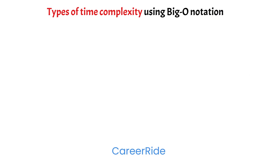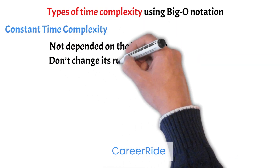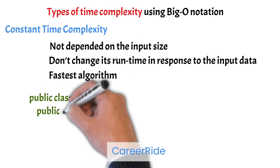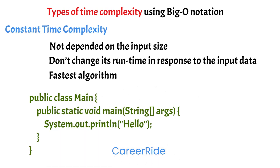Now let's understand the types of time complexity using Big O notation. Constant time complexity: when an algorithm is not dependent on the input size and does not change its runtime in response to the input data, it is said to have constant time complexity. An algorithm with constant time complexity is the fastest. This algorithm performs the print operation only once and takes constant time to execute, no matter which hardware or software you are using. Here the runtime doesn't increase as input size grows, so in Big O terms, constant time complexity is denoted as O(1).